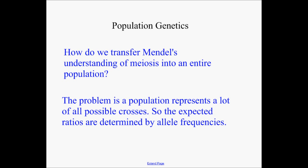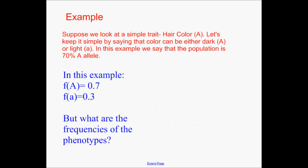What we'll find is that Mendel's laws still apply, but in a much bigger way. Let's look at a very simple example — let's stick with hair color. Suppose that hair color is gene A. Let's say that dominant A would be dark hair colors, black, brown, and so forth. And that small a recessive would be light — blonde, red hair, and so on. Let's just imagine in this population that the frequency of dominant A allele is 70%.